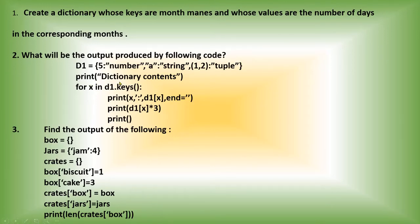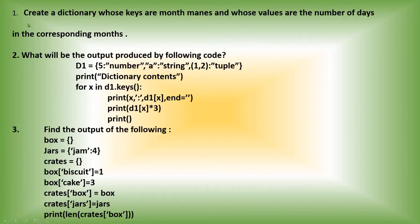Now see the next print statement — this message will be displayed as it is. Then there is a for loop: for x in d1.keys(). So the variable x will get the key values of the dictionary d. Note: in this question it is capital letter D, but in the code I used small letter d, so it will show an error. You have to correct it to small letter d. So for x in d1.keys() means you will get the keys of the dictionary d1.